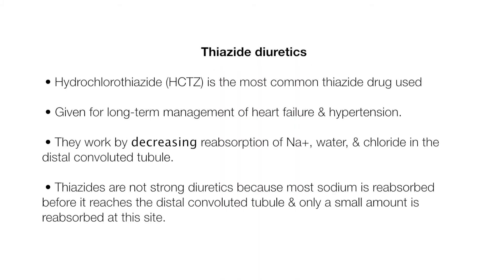Thiazide diuretics are the most commonly used diuretic. Hydrochlorothiazide, also known as HCTZ, is the most common thiazide drug used. It is given for long-term management of heart failure and hypertension. Thiazide diuretics work by decreasing the reabsorption of sodium, water, and chloride in the distal convoluted tubule. Thiazides are not strong diuretics because most sodium is reabsorbed before it reaches the distal convoluted tubule, and only a small amount is reabsorbed at this site.